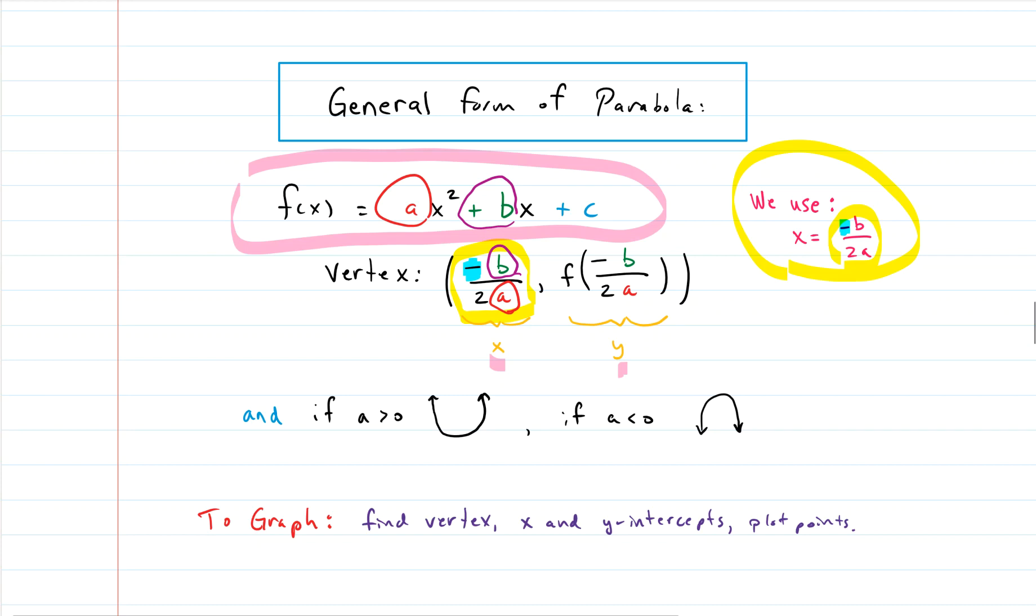So once you compute negative b over 2a and plug that number in for x, then you take that number for x and you plug it back into the function and out pops the y associated with that x. So that's where you get your y value from. You plug the value you got for x, the negative b over 2a. You plug it into the function and out comes your answer for the y. And there's your xy coordinate for your vertex. So it's not hard. You just follow the formula that x value is negative b over 2a. Once you get that, you plug it back into the function you're dealing with, the parabola, to find the y value and you're good to go.